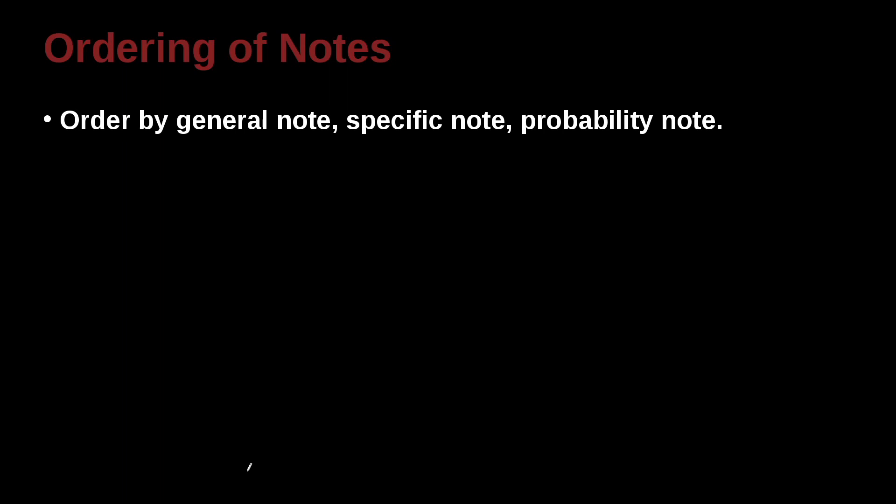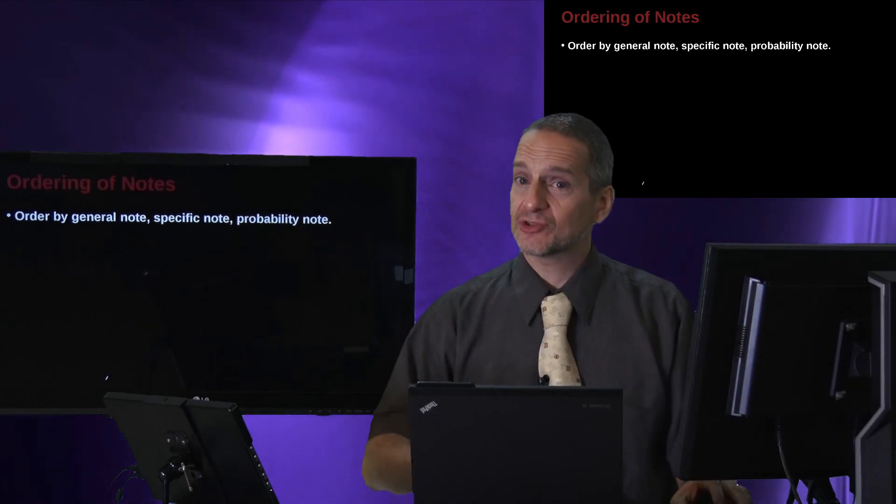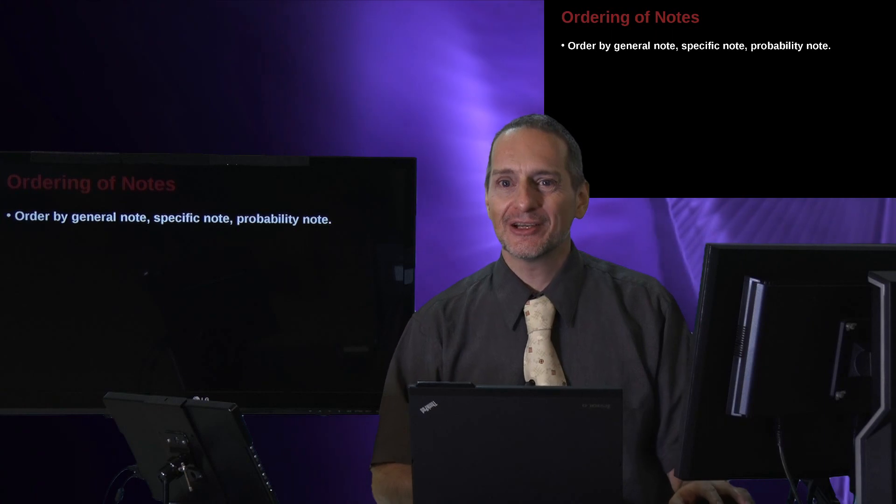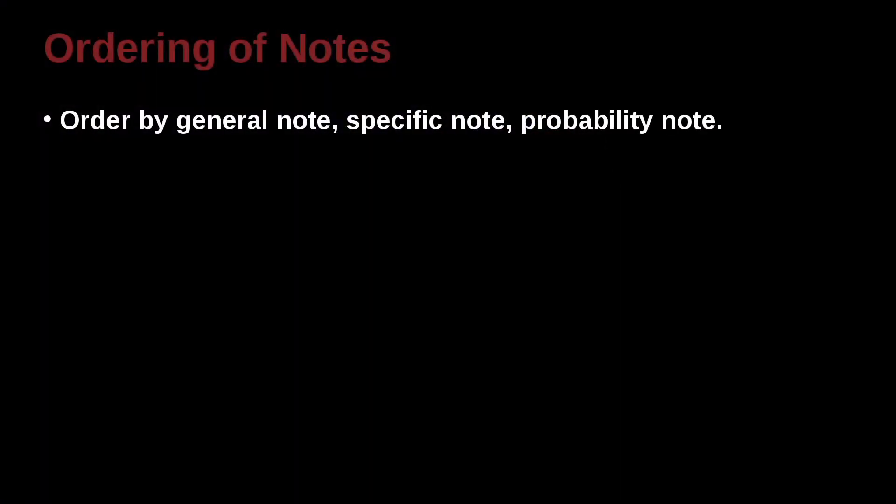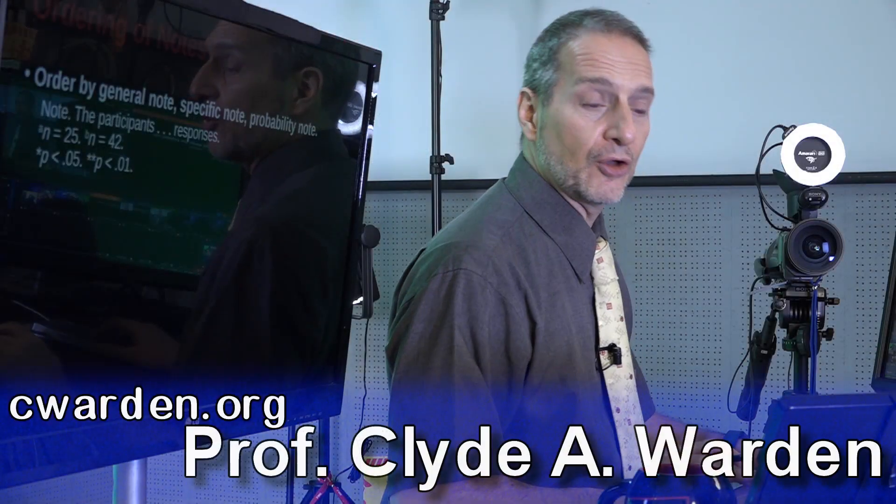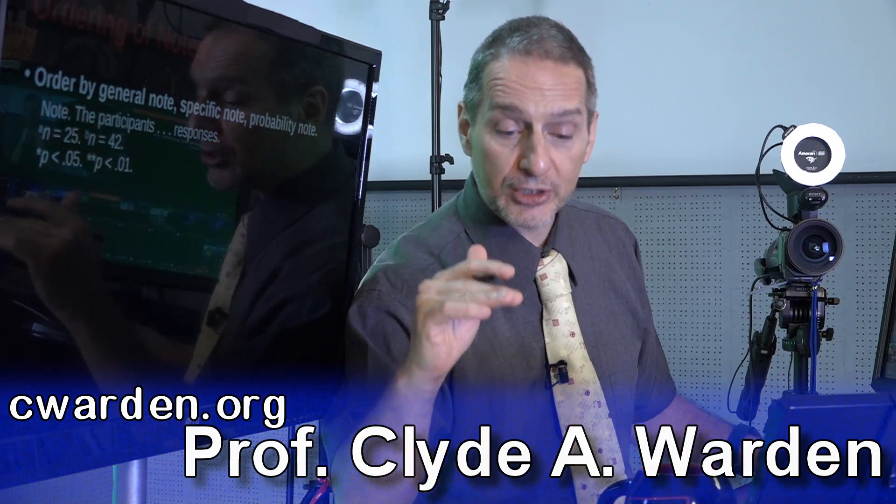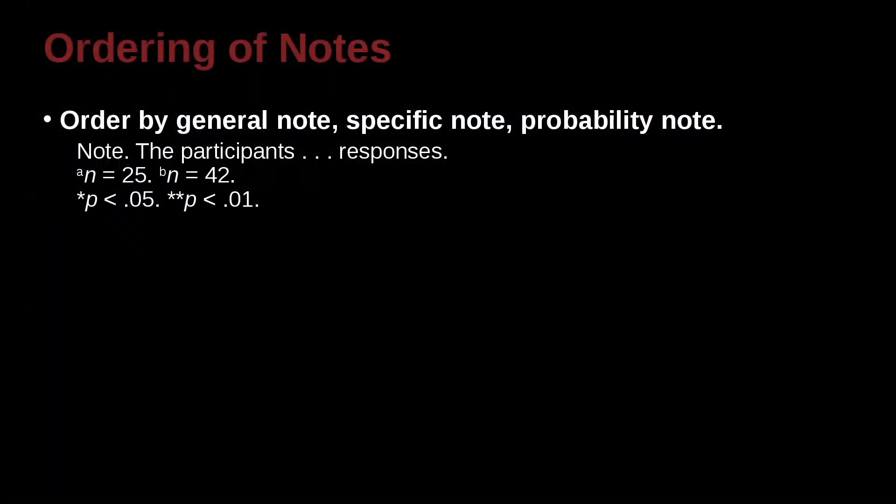How about ordering notes? The way you order notes, because you can have many notes, as you saw that last example really had a ton of notes. How do you put notes together? You can order them in this way: general goes first, specific goes next, and probability goes last. So it would look something like this: a general note, and then a specific note, and then your probability note. That's keeping it nice and simple. If you look at a table, you look at the notes, you look at the bottom of the notes, you can see the p-values, the probability values, because they go last.